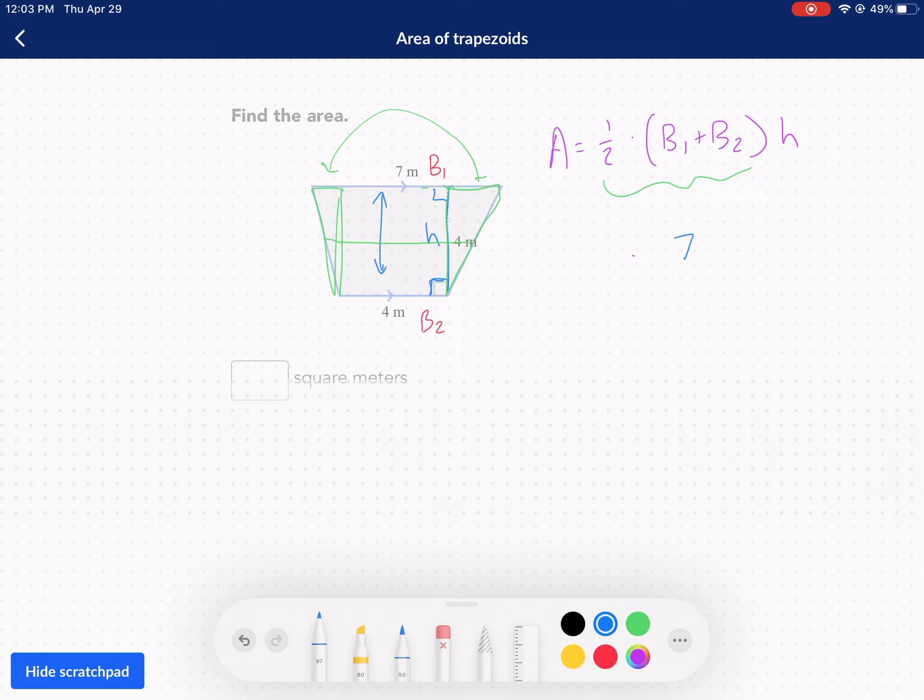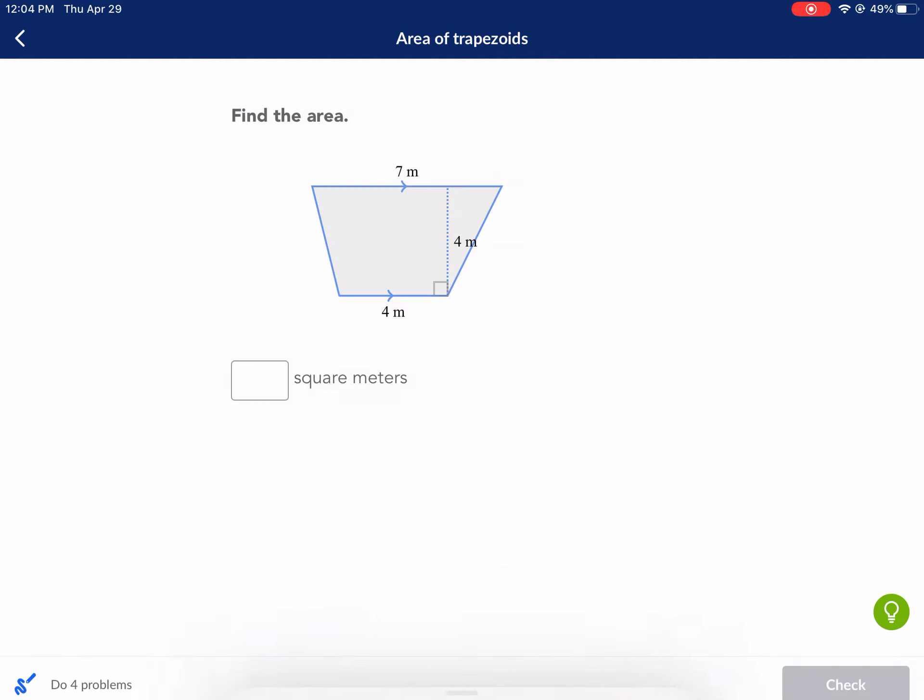So I'm going to plug in my base one, which is seven, my base two, which is four. I multiply that by four and then all of that by one half. Now I can choose which order to multiply in. I would do one half times the four first to get two. And then seven plus four, we would get eleven. And this makes it a little bit easier. I would get 22 square meters. Those are the units. So two times eleven, 22.